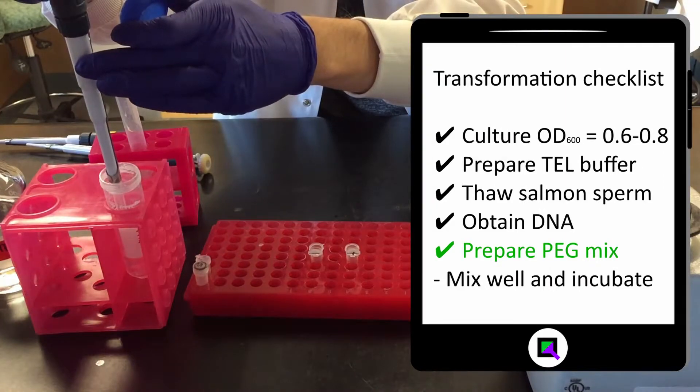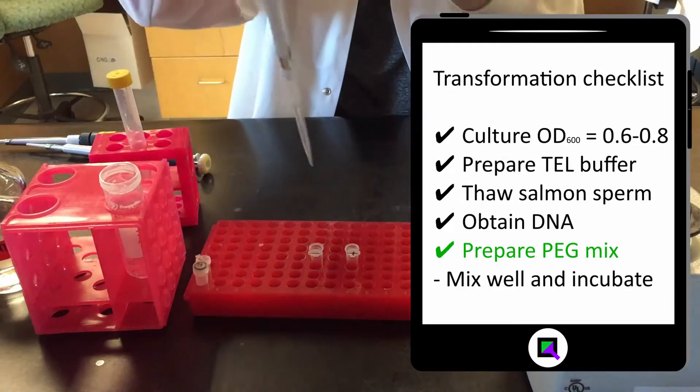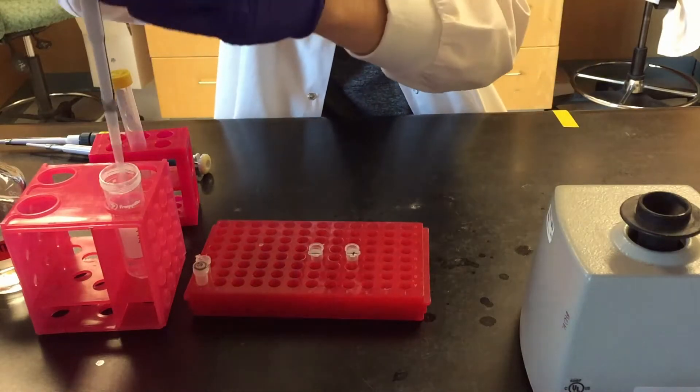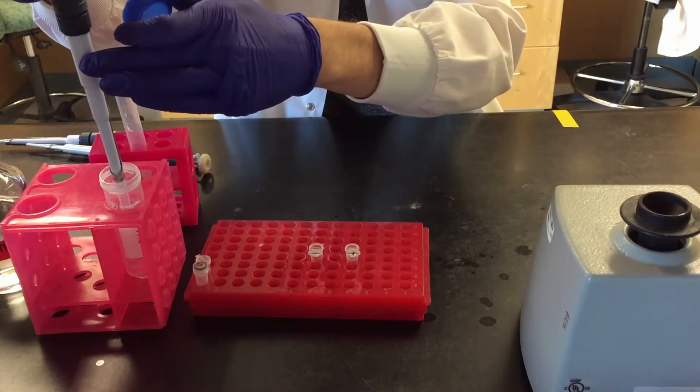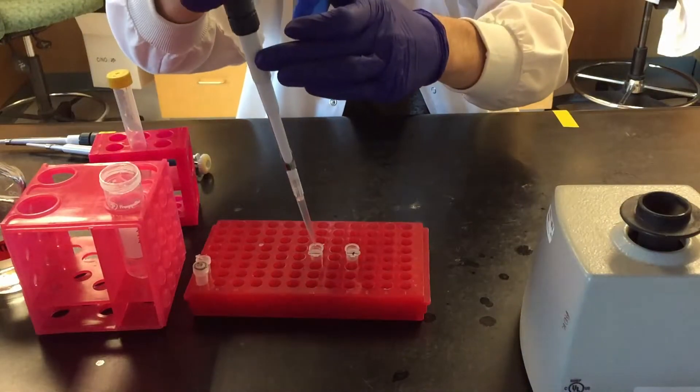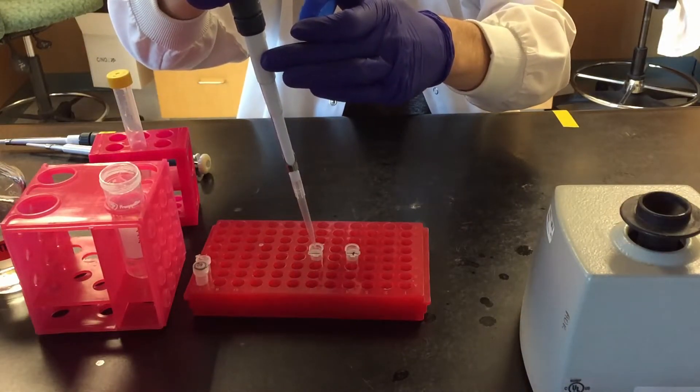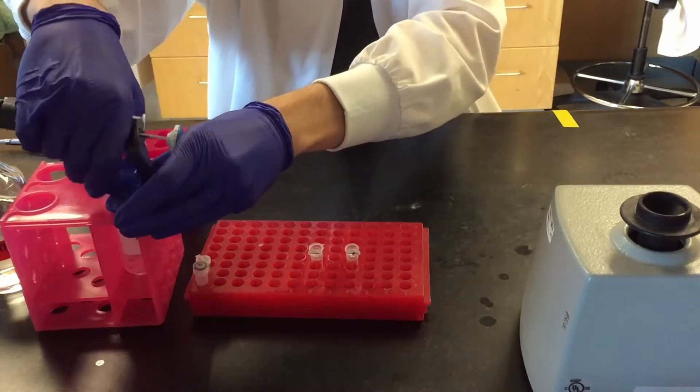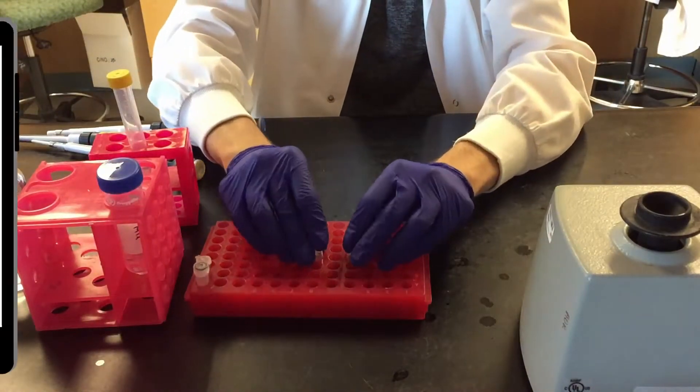Add 900 microliters of PEGMIX to each tube and mix well by vortexing. PEGMIX is polyethylene glycol diluted in Tel Buffer. PEGMIX is thought to improve transformation efficiency by altering the chemical environment around the cell to promote DNA uptake.